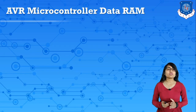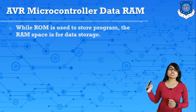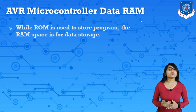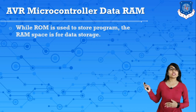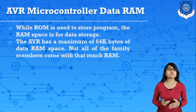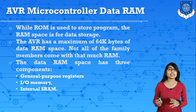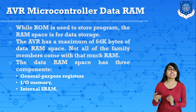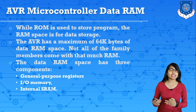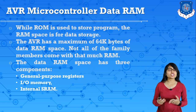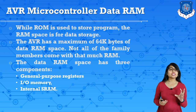Next we have AVR microcontroller data RAM. While ROM is used to store the program, the RAM space is used for data storage. This AVR has a maximum of 64K bytes of data RAM space. The data RAM space can be divided into three components: general purpose registers, IO memory, and internal SRAM. These three components make up the data RAM.